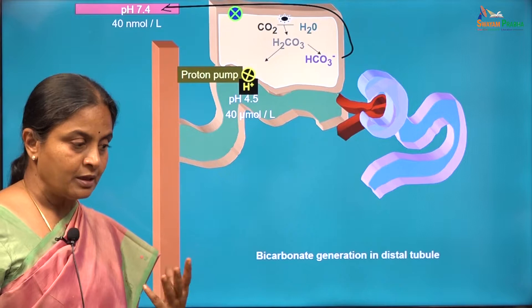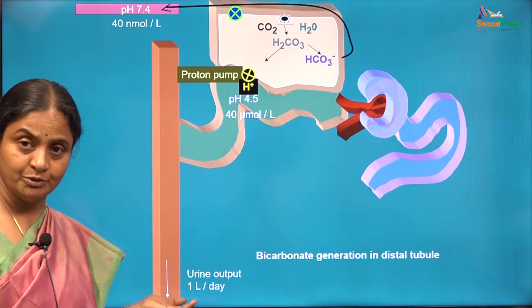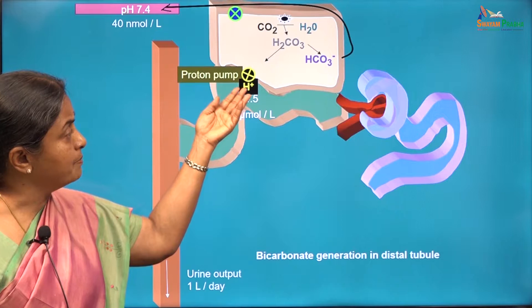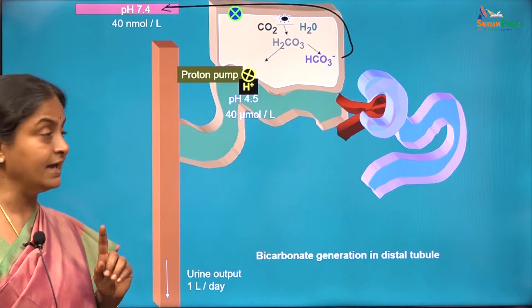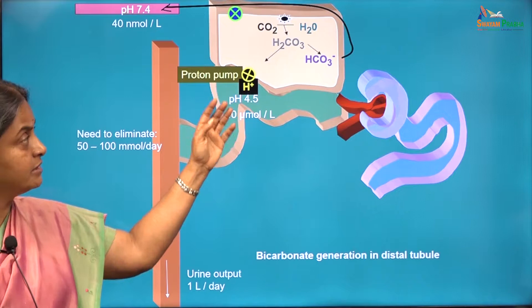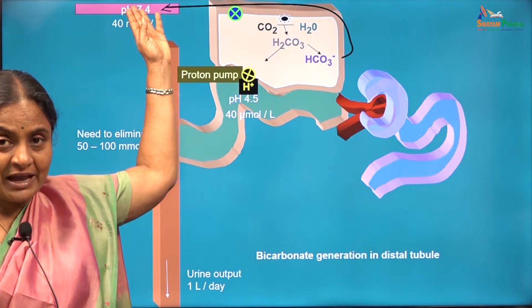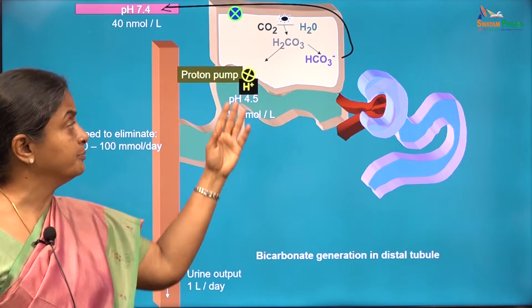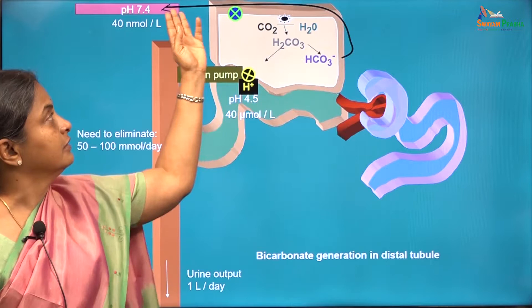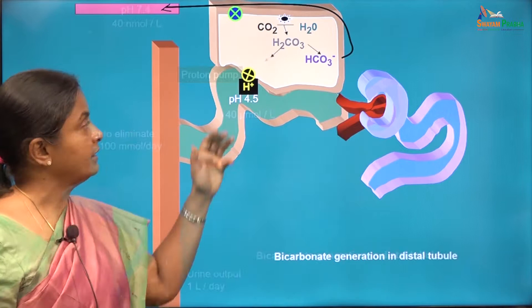Only about 1 litre of urine is formed per day, so if only the pump were available for proton extrusion, only 40 micromoles of protons could be excreted per day. But we know that 50 to 100 millimoles of protons must be eliminated every day to generate the bicarbonate necessary for buffering those protons from fixed acids. Therefore, it is obvious that the proton pumps alone are insufficient to achieve the quantum of bicarbonate generation required.